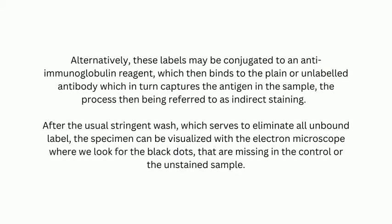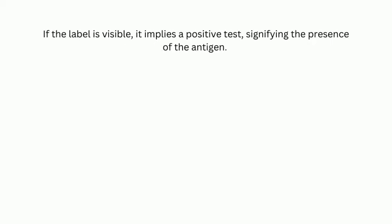After the usual stringent wash, which serves to eliminate all unbound label, the specimen can be visualized with the electron microscope, where we look for black dots that are missing in the control or the unstained sample. If the label is visible, it implies a positive test signifying the presence of the antigen.